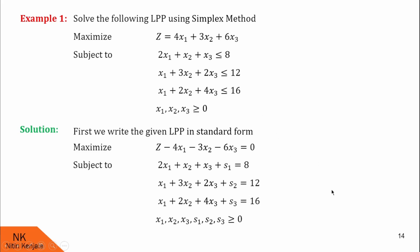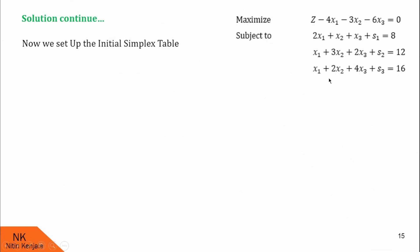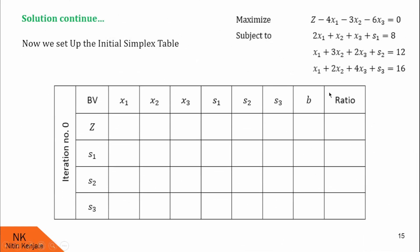This is the standard form of the given LPP. In the next step, we set up the initial simplex table. In the row of basic variables, we mention all the variables involved: x1, x2, x3, s1, s2, s3, RHS, and the ratio column. We write the objective function name and below that we list all the slack variables. Since there are three slack variables, there will be three more rows.